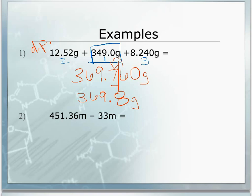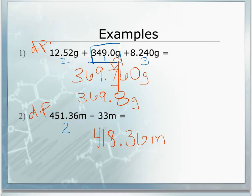In the second problem we're doing subtraction, so again we're looking at decimal places. Put it into the calculator and you get 418.36 meters. Looking at the number of decimal places in our values, we have two here and zero here. Since zero is the smallest, our answer must be written with no decimal places. So it's going to be 418 — the three does not round the eight up, so it's just 418 meters.